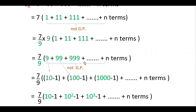So you have to convert further. Write 9 as (10 minus 1), 99 as (100 minus 1), and 999 as (1000 minus 1), and so on till n terms. We write it this way because 10, 100, 1000 are in GP — the common ratio is 10 — and 1, 1, 1 are also in GP with ratio 1.